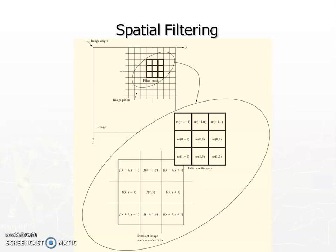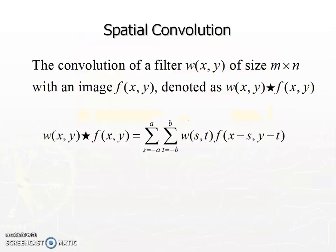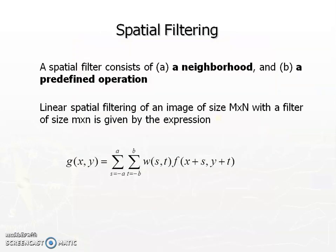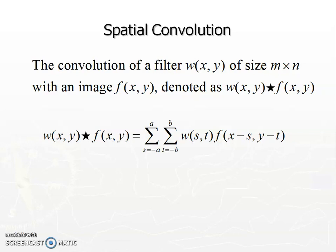This is generally true for most linear filters. You can have non-linear neighborhood operations as well, which we will see in today's session. The convolution of a filter w(x,y) of size M by N with an image f(x,y) is given by summation over s from -a to a and t from -b to b of w(s,t) multiplied with f(x-s, y-t). This expression is equivalent to the previous one since s and t cover the same ranges.